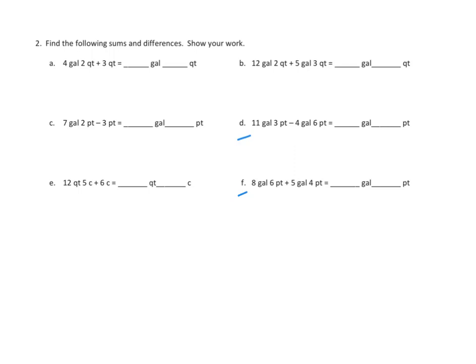Well, the problem we're gonna have here is it's easy enough for us to subtract four gallons from eleven gallons. But, we can't really subtract six pints from three pints. We need more pints. So, let's break this down. We're gonna break down eleven gallons into ten gallons, and that would be four quarts or eight pints.